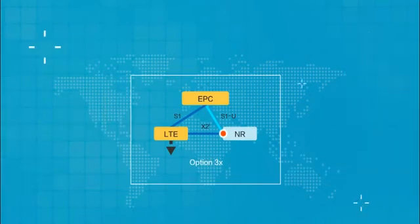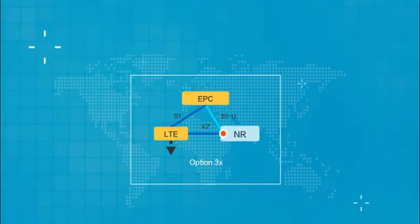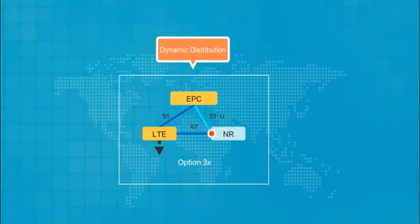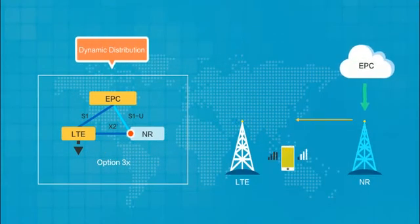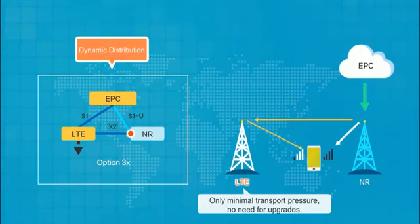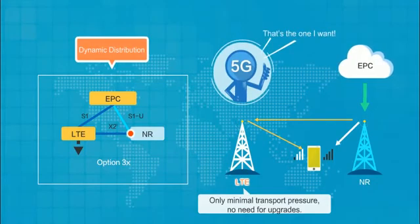In Option 3X, the user plane traffic is distributed by the NR base stations. This option is dynamic, like Option 3, but does not put the same transport pressure on existing LTE sites. With Option 3X, you do not need to perform large-scale upgrades and reconstruction of existing sites. As such, this is the first choice for 5G pilot networks.